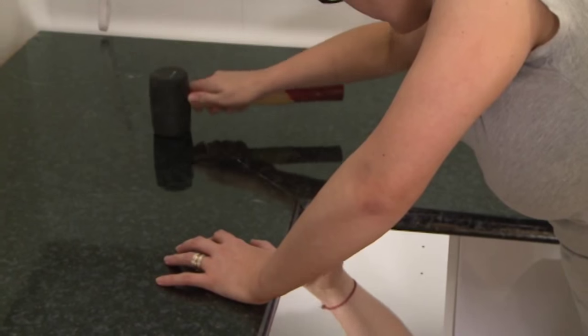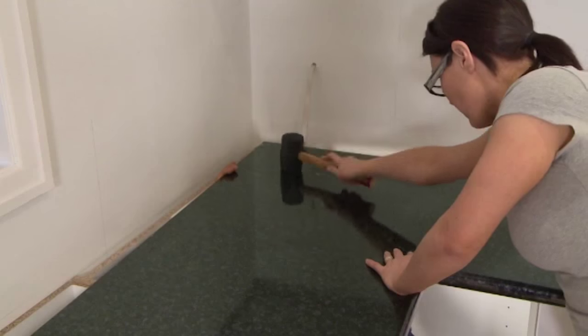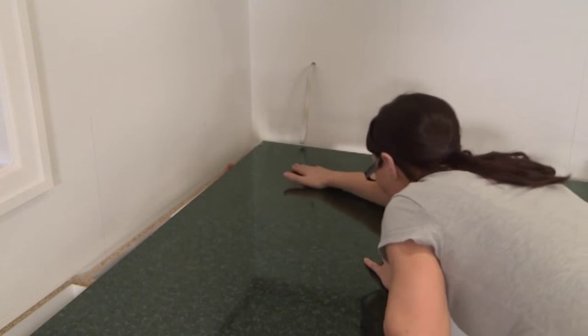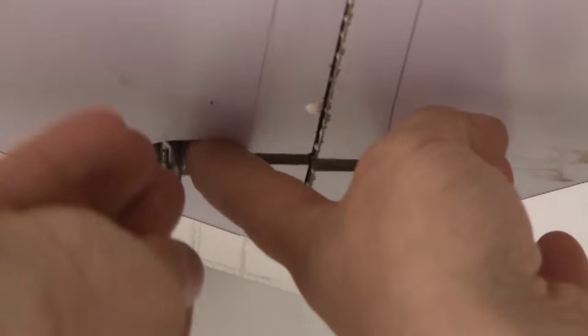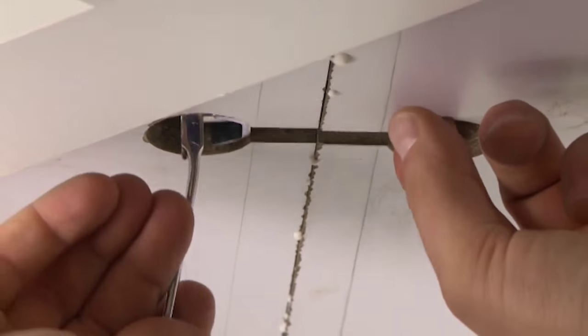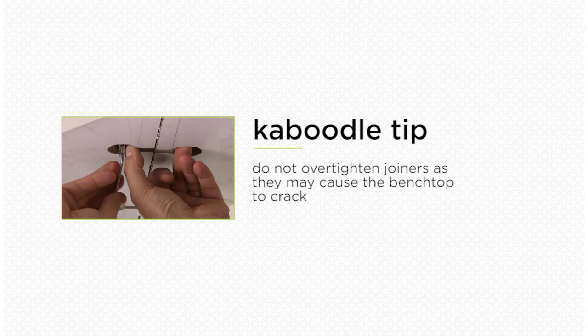You may need to gently tap the benchtops with a rubber mallet to ensure they're flush. Once the benchtop is flush and all joiners are in position, continue to tighten the joiners so they are secure but be sure not to over-tighten as this may cause the benchtop to crack.